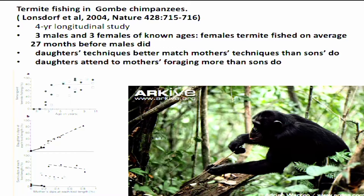There have been only two longitudinal developmental studies in the wild for primates focusing on social learning of food processing techniques. One is a study of termite fishing in Gombe chimps by Lonsdorff et al., a four-year longitudinal study. They had three males and three females of known ages, and females termite-fished on average 27 months earlier than males. The daughters' techniques matched the mothers' techniques better than the sons' did. They attribute the sex difference to more dedicated visual attention by females to their mothers — the sons were mainly playing near the termite mounds. In chimps and orangutans, the primary exposure immature animals have is to their mothers.